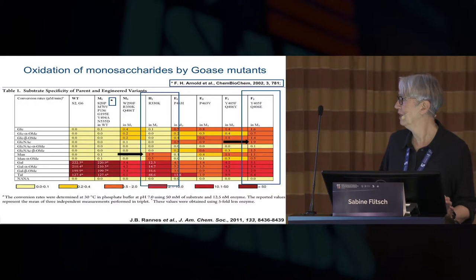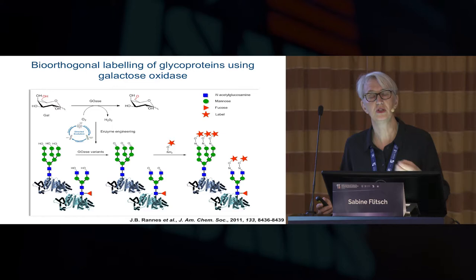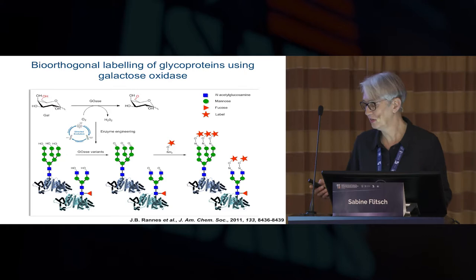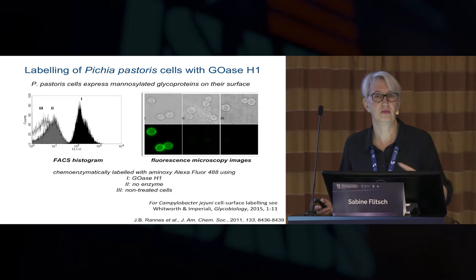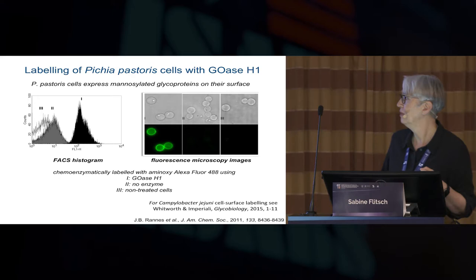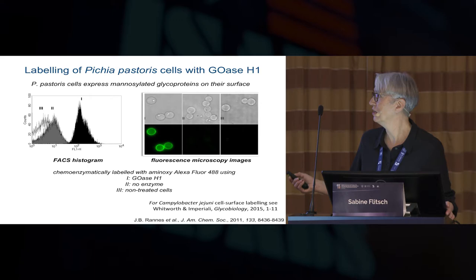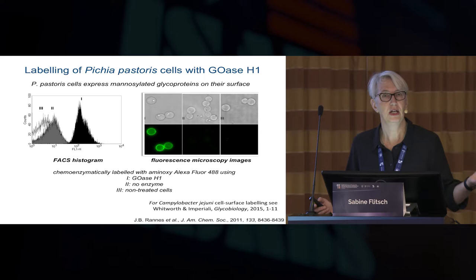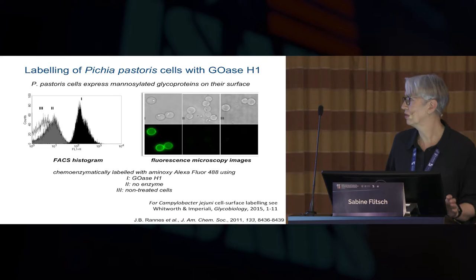We can use these mutants as a much broader enzyme for cell surface sugar labeling. In a context where you have only mannose or only N-acetylglucosamine, we demonstrated in our paper that we can label proteins and also yeast cells. Yeast cells have a lot of mannose; they don't have galactose on their surface. The H1 mutant was able, with good selectivity and intensity, to label mannose on yeast cells. You can put a fluorescent label on, or you can put biotin on — a really nice orthogonal method to existing methods.